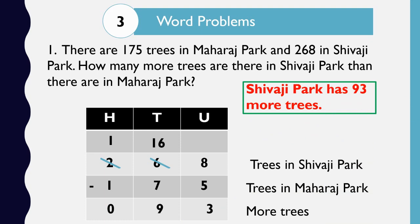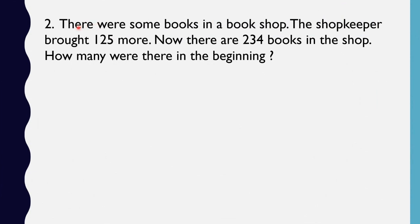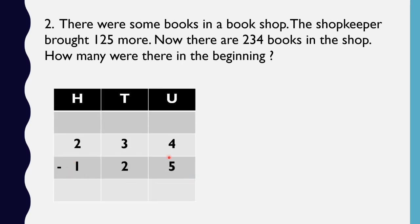Second sum: there were some books in a bookshop. The shopkeeper brought 125 more. Now there are 234 books in the shop. How many were there in the beginning? So students, we have to find out how many books were there in the beginning, so we have to subtract 125 from 234.